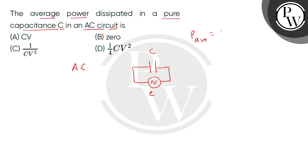So average power is the RMS value of voltage multiplied by the RMS value of current multiplied by the power factor, i.e., cos φ.